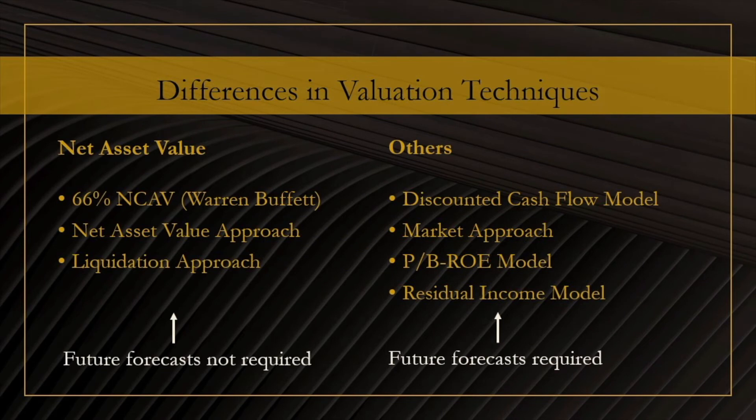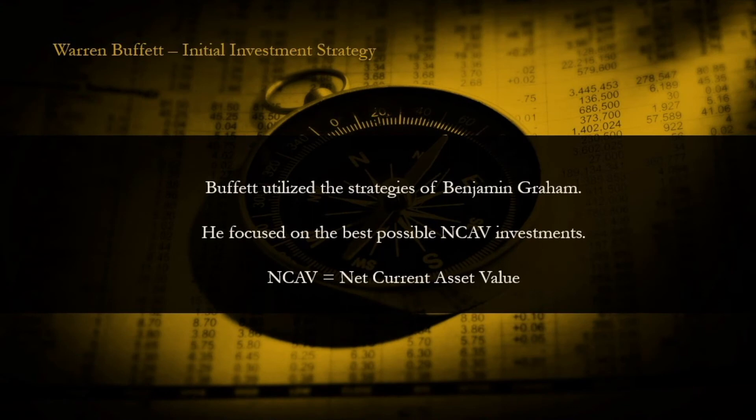All three of these models have one thing in common: they focus on a company's current performance and do not assess future performance. In contrast, all of the other models listed are either directly or indirectly related to a company's future performance. So let's get started by looking at the 66% NCAV approach.